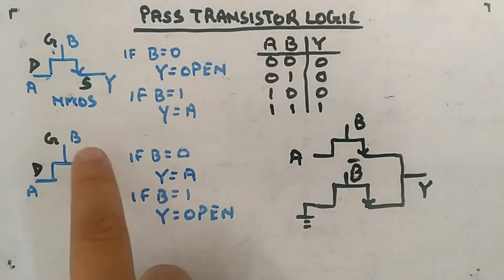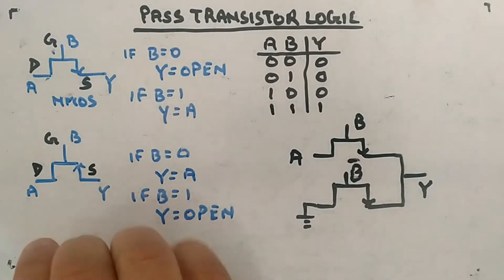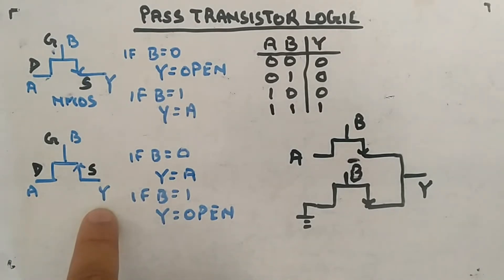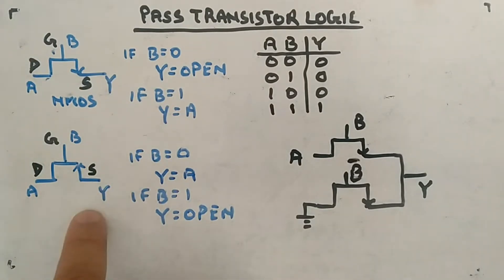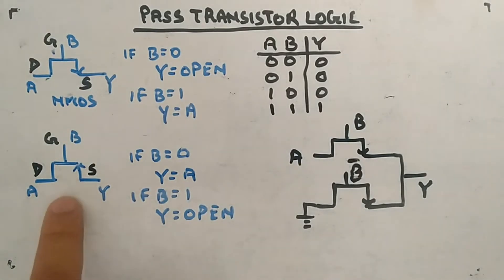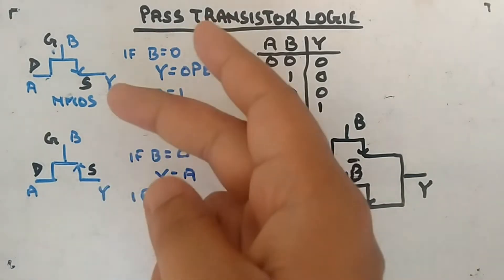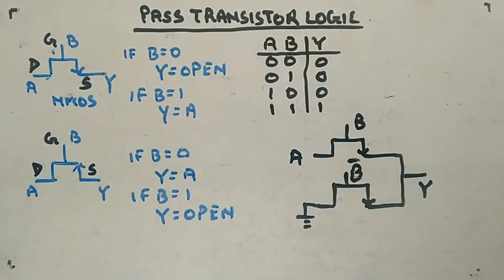Similarly for PMOS: source, drain, gate — B is the controlling input, A is the normal input, Y is the output. If B is 0, it connects A to Y, so Y equals A. If B is 1, it acts as open, so Y is open. It's acting like a switch — B=0 means closed, B=1 means open — just the complement of the NMOS behavior.